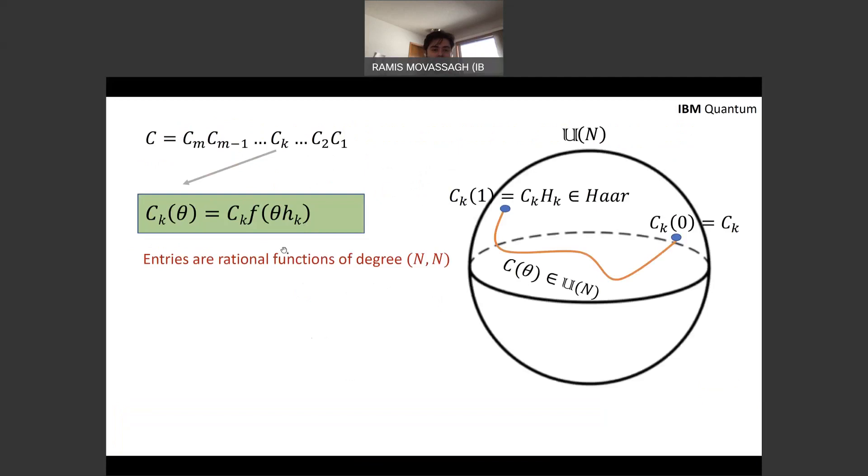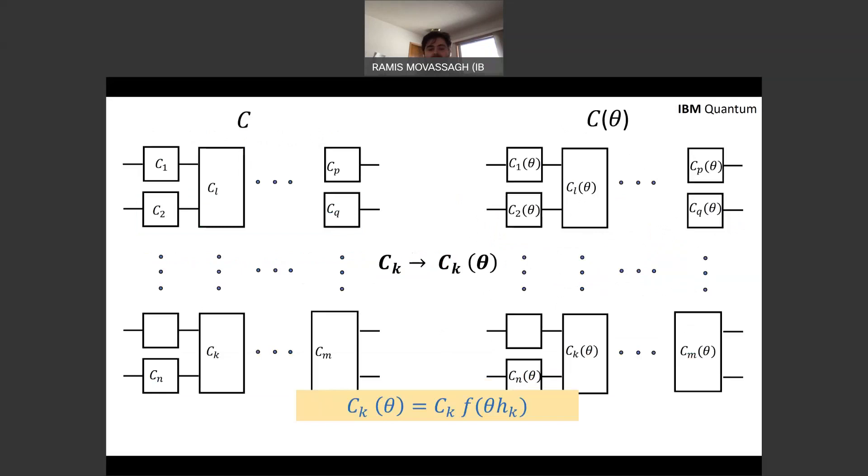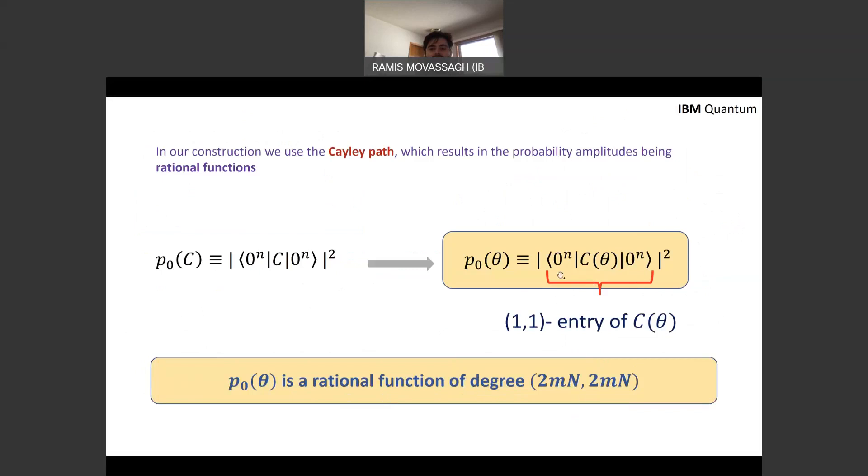So therefore, the deformation is such that the gates, that every one of the gates are replaced by this Cayley path deformation. And at theta equals zero, F of zero is identity. And you simply get the worst case circuit, C_K. And at theta equals one, you have C_K times H of K, which is a Haar random gate. And that's by translation invariance of the Haar measure. And by construction, one will see that the entries of the full circuit will be rational functions of type MN, MN. And this is just to emphasize that the Cayley path is applied to each one of the gates independently. So the probability amplitude then as a result of this squaring will be a rational function of degree 2MN, 2MN.